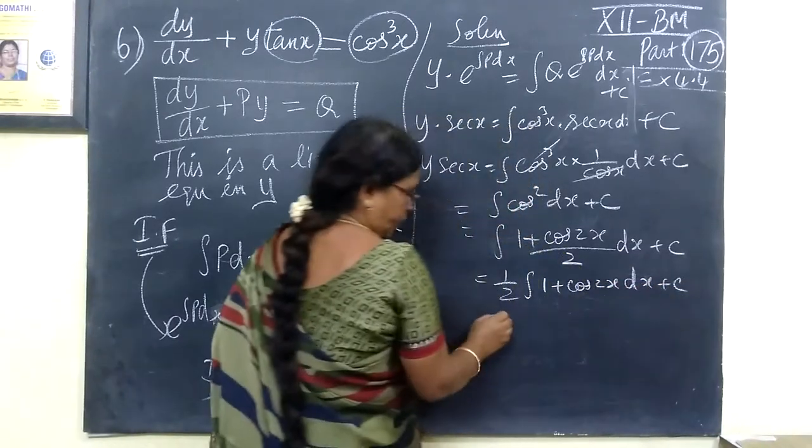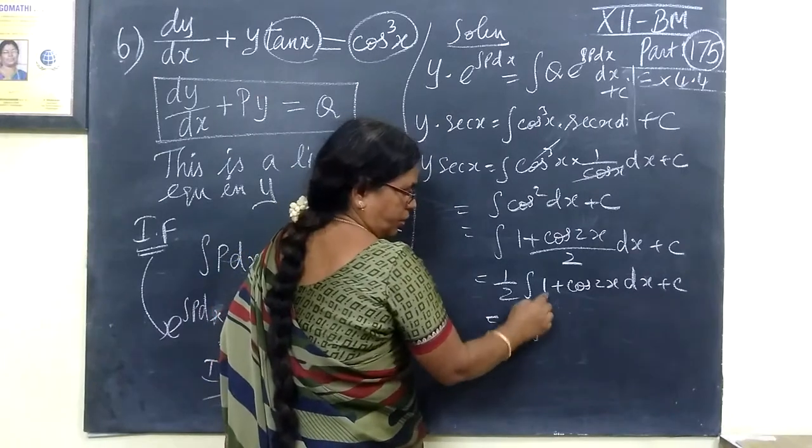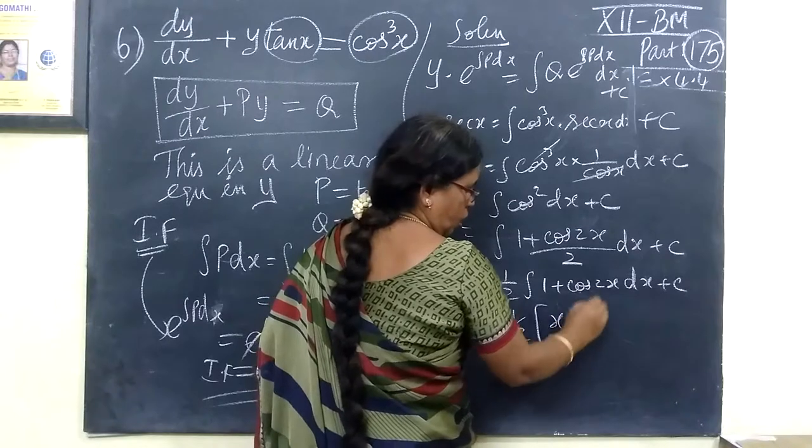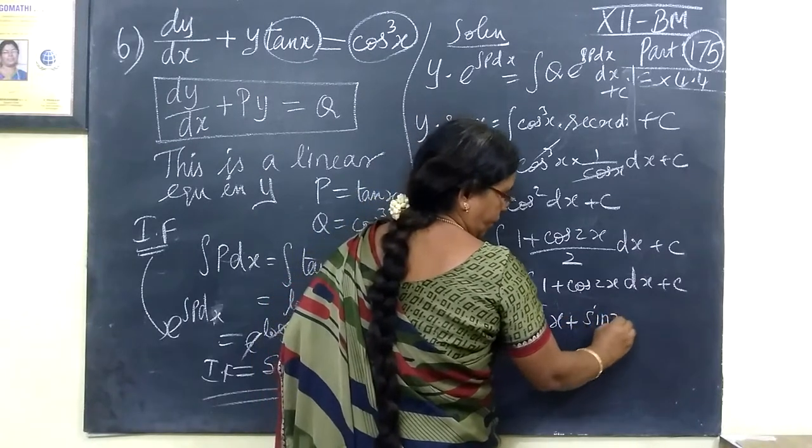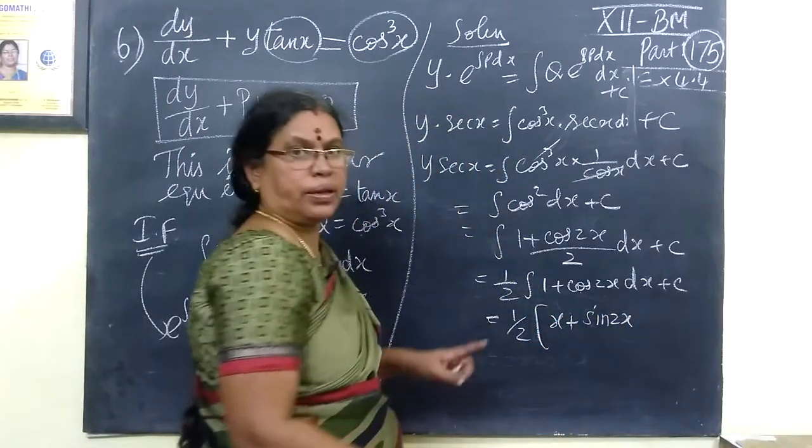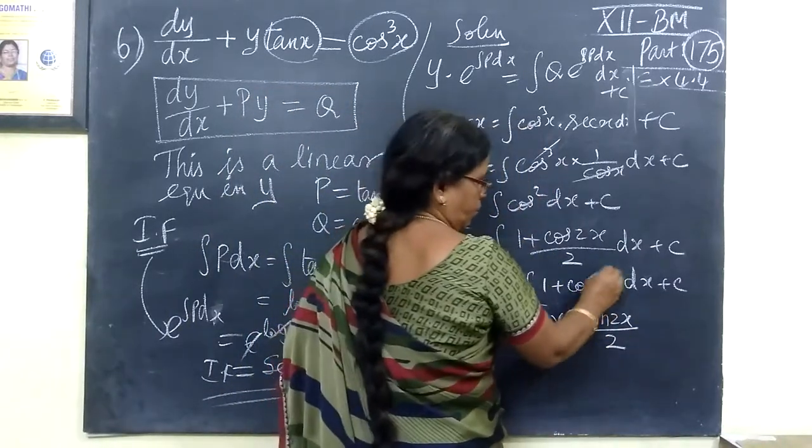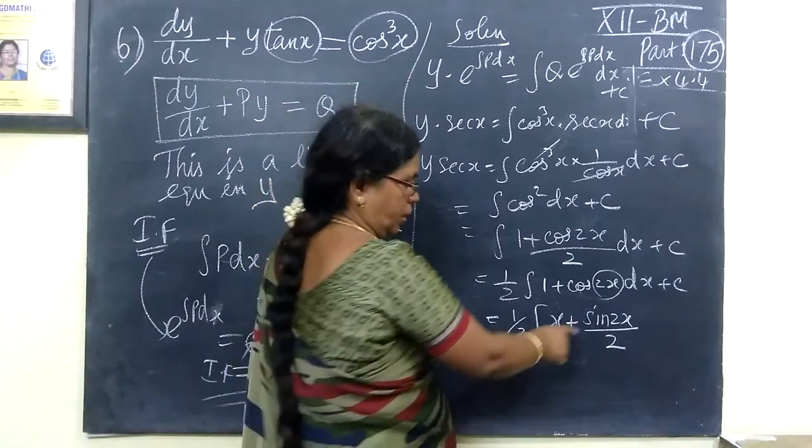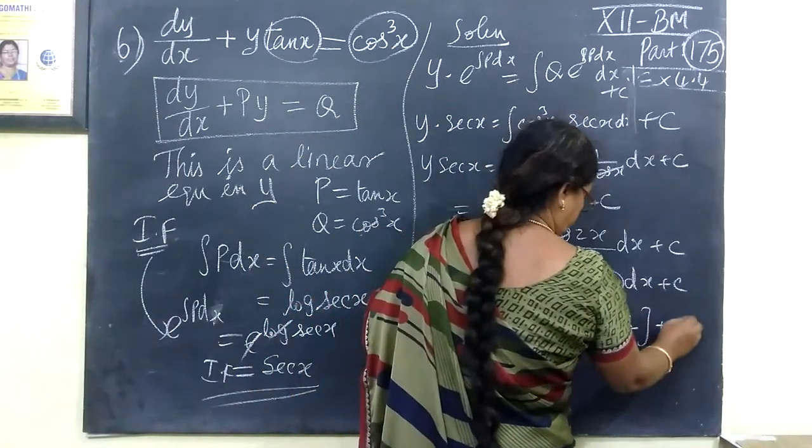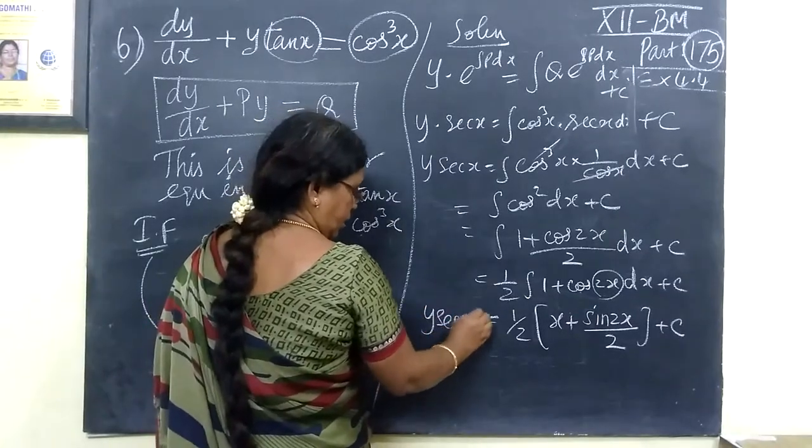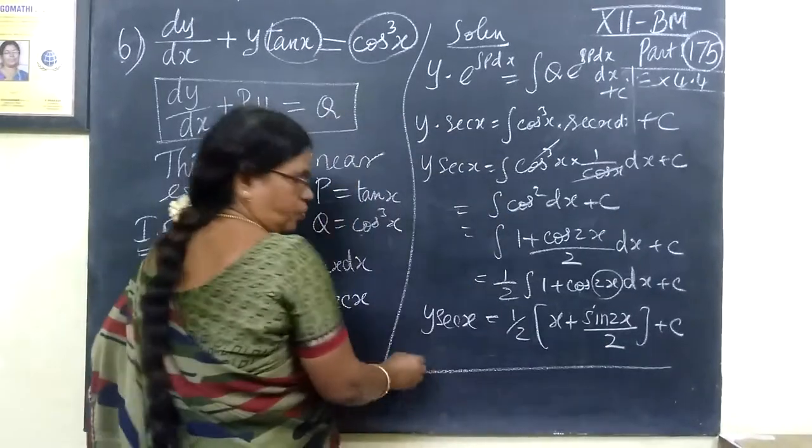Integration of constant 1 is x plus cos 2x. When you differentiate, integration, when you differentiate, this is y2. So y secant x. So the answer for this: y secant x.